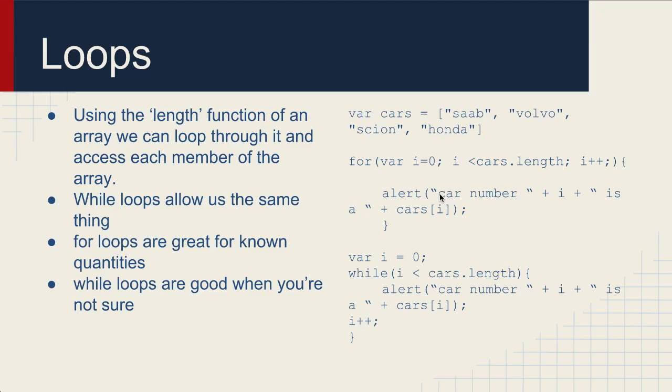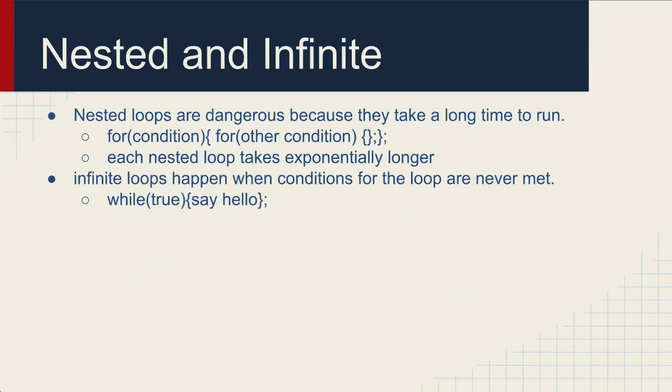Now a while loop works pretty much the same way. The main difference is we have to declare i first and then say while i is less than cars.length, do all of this. Part of this loop contains an incrementation of i. So essentially, while loops allow us to do the same thing as a for loop, but for loops are great for known quantities. So if you know this is the size of your list, you know you can go through it this number of times. While loops are good when you're not sure. Say you're waiting for a temperature to happen or say you're evaluating if something is a prime number, then you can have it loop through until that condition is met.